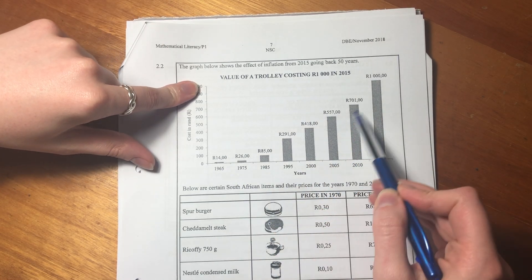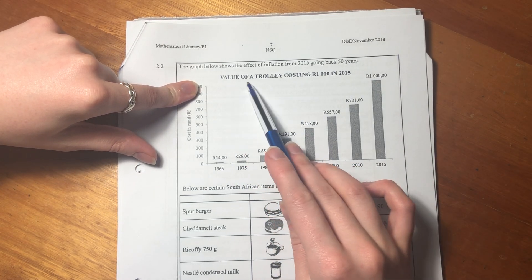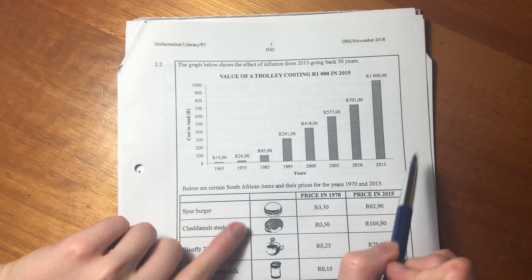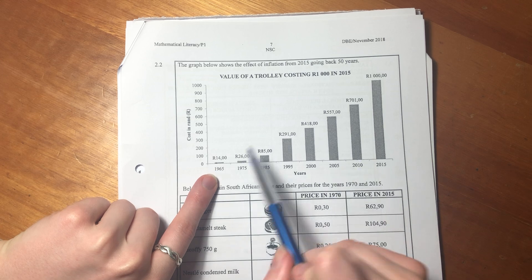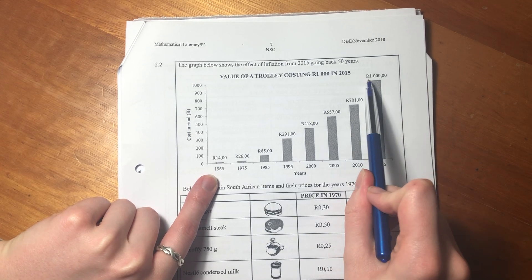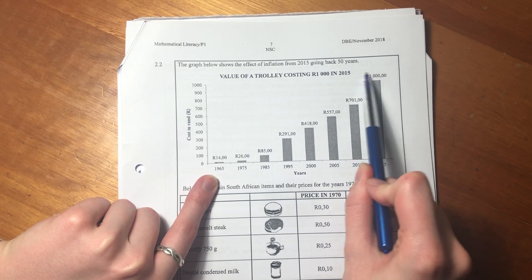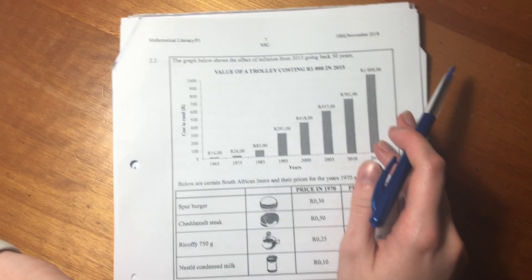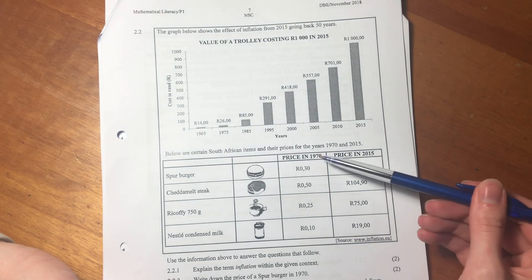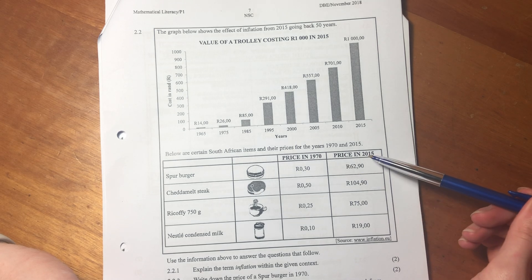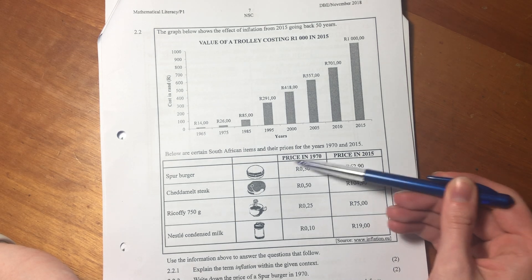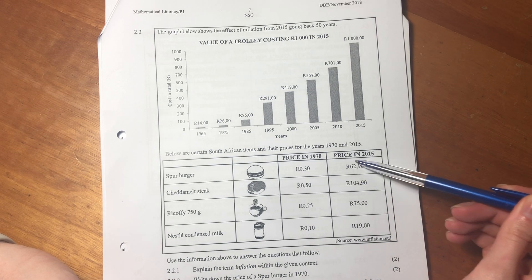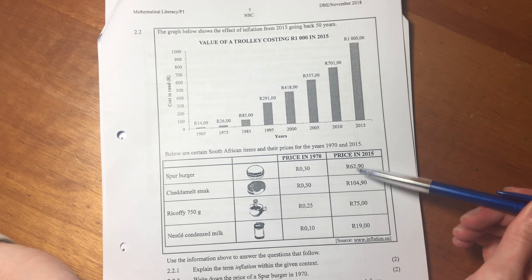So inflation, value of a trolley costing $1,000 in 2015. It's basically saying that 50 years before 2015, the same things that you would have bought that cost you $1,000 would have cost you $14 in 1965. Then it compares the prices in 1970 to 2015. A lot cheaper because inflation increased the amounts over time.